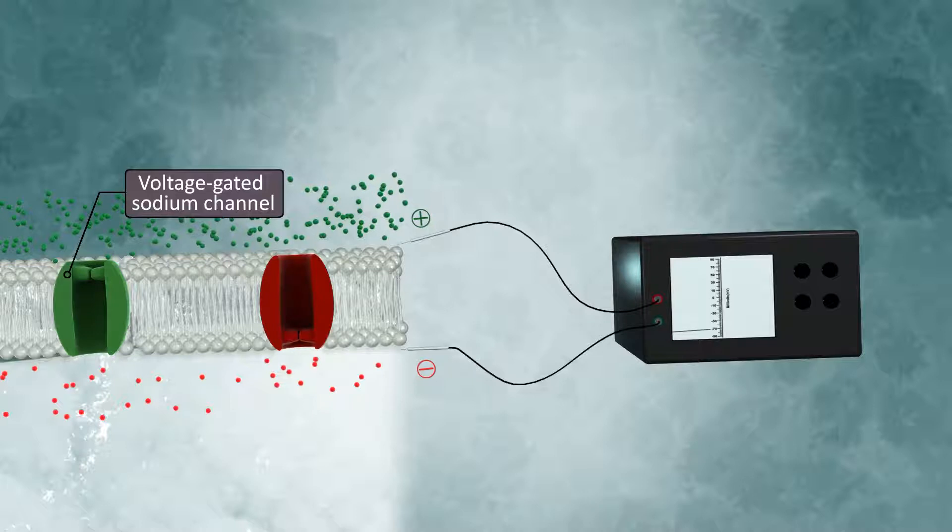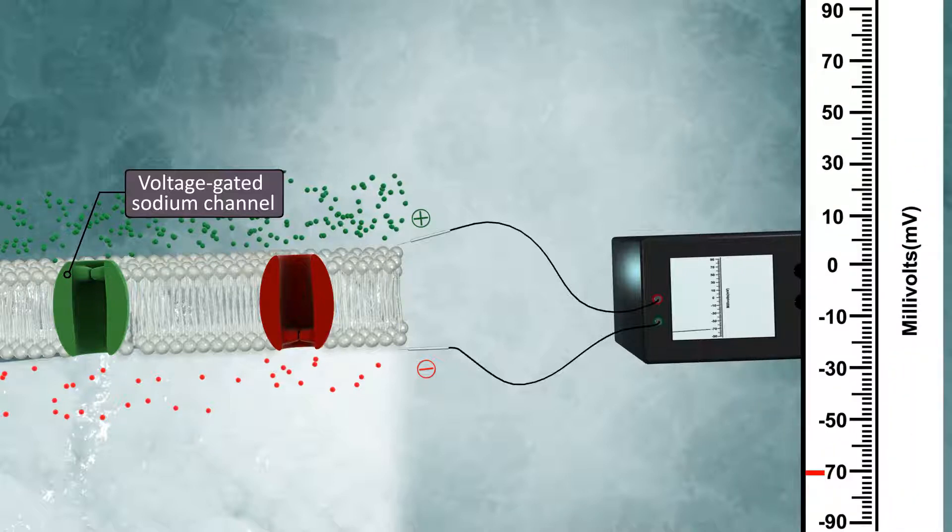A voltage gated channel opens at a specific voltage, referred to as the threshold. For example, the threshold for a voltage gated sodium channel is around negative 55 millivolts. When the membrane voltage increases from its resting state of about negative 70 millivolts to the threshold, the channel gate opens, and sodium diffuses through the channel to the other side of the membrane.